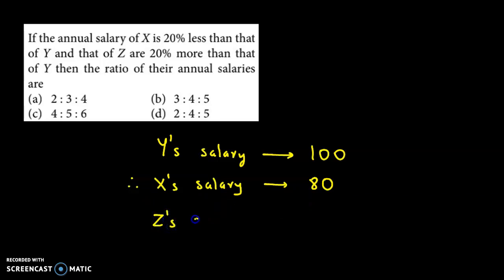Z's salary is 20% more than Y's salary. So if this is 100, then Z's salary will be 120.